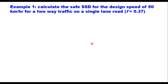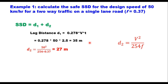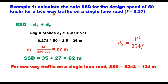Example 1: Calculate SSD for a design speed of 50 km/h for two-way traffic on a single-lane road, with f = 0.37. Step 1: Lag distance d1 = 0.278 × 50 × 2.5 = 35 m. Step 2: Braking distance d2 = 50² / (254 × 0.37) = 27 m. Therefore SSD = d1 + d2 = 62 m. Since it is a single-lane road with two-way traffic, the required minimum stopping sight distance is twice this value: 124 m.